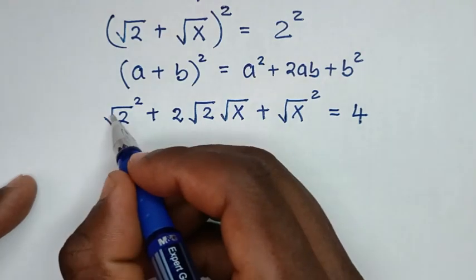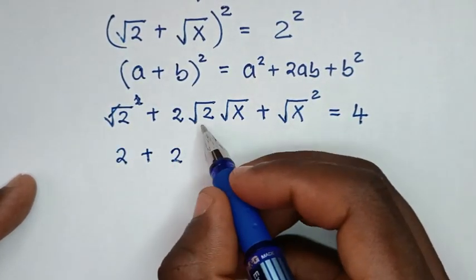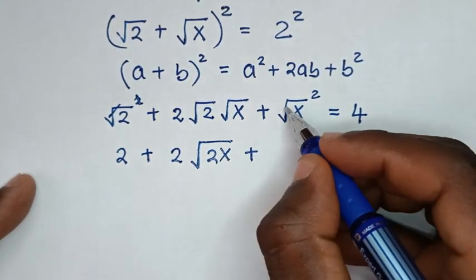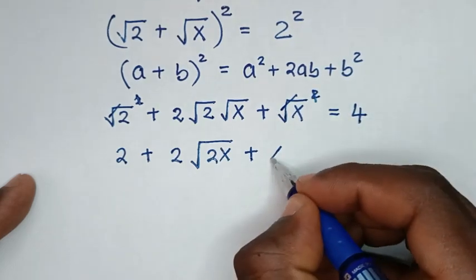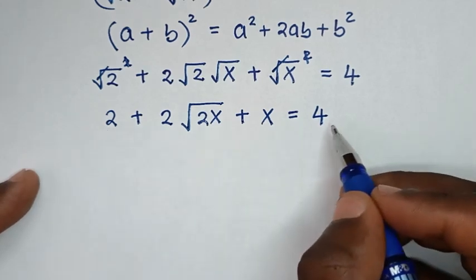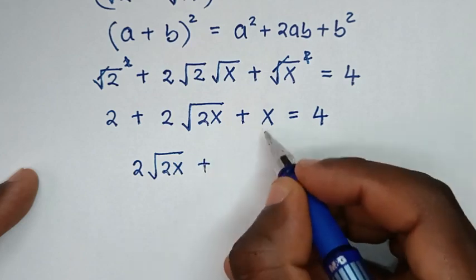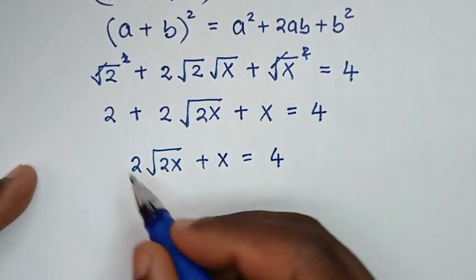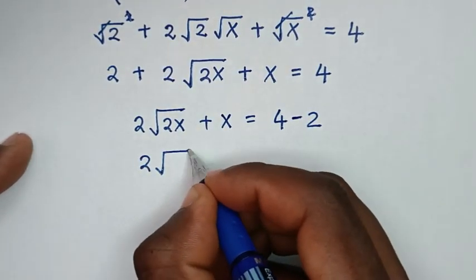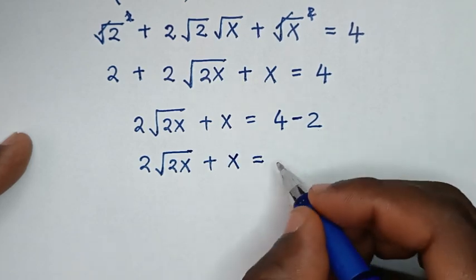The square root cancels with the square, so it becomes 2. Then plus 2√2·√x which is 2√(2x), plus x equals 4. We take 2 to the other side: 2√(2x) + x = 4 - 2 = 2.